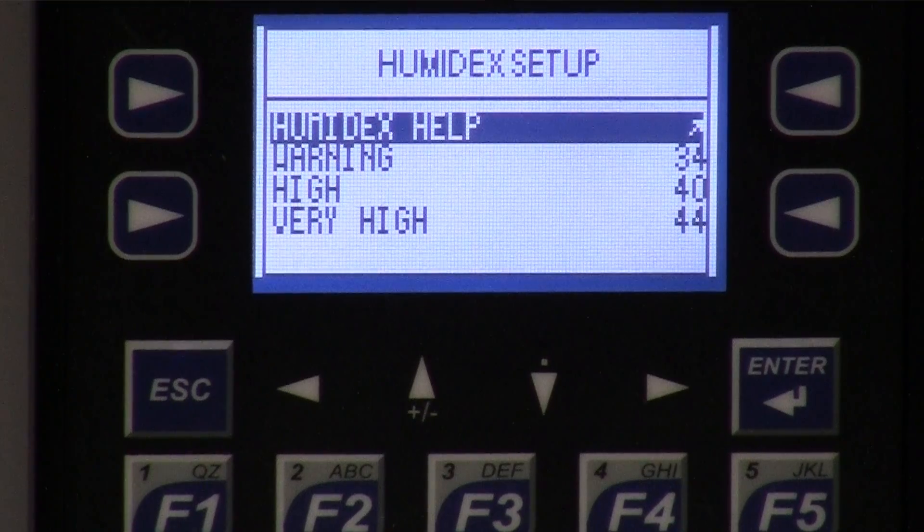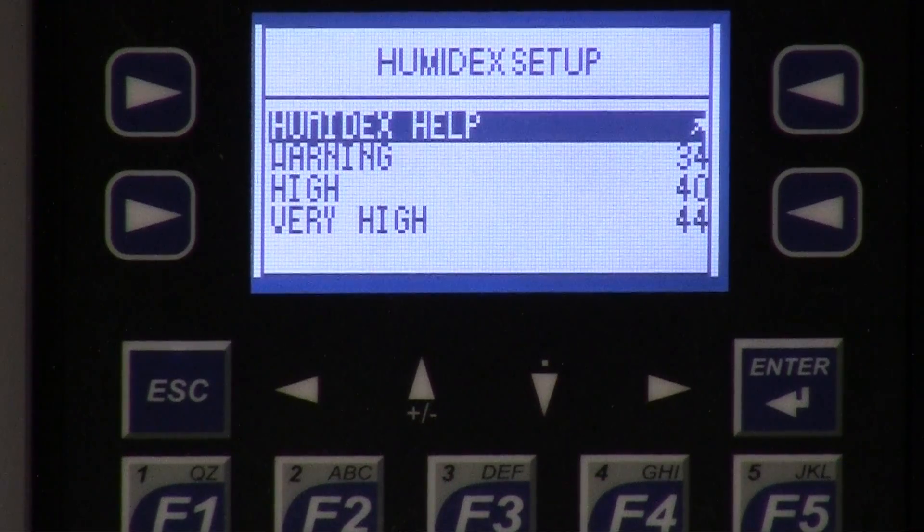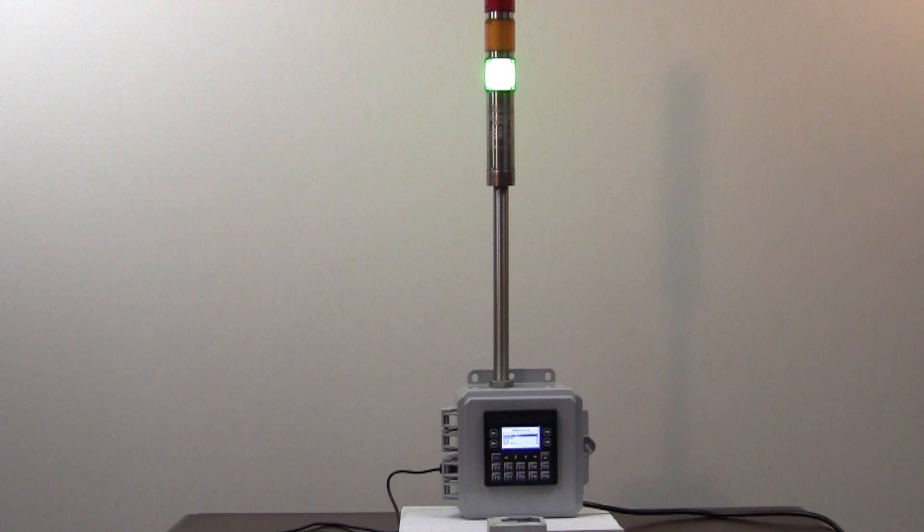If any of the three monitor settings exceed their set points, the offending value will flash on the screen, and the indicator lights will display accordingly.